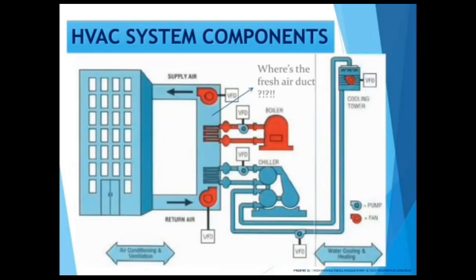The basic HVAC system components consist of return, supply, and fresh air system. As you can see in the building, there is an air handling unit which supplies air to the building, and there is a return air back to the air handling unit.